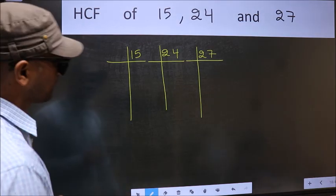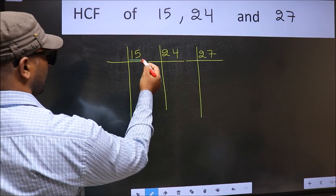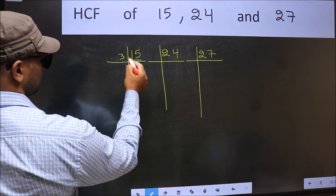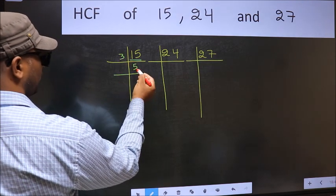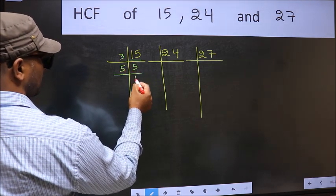Next, here we have 15. 15 is 3 times 5. Now 5 is the prime number so 5 once 5.